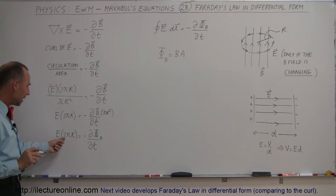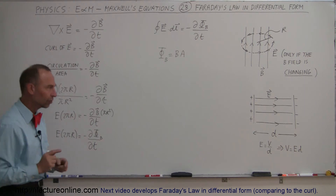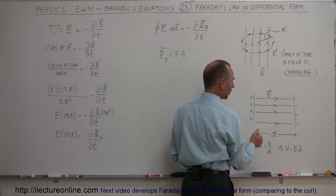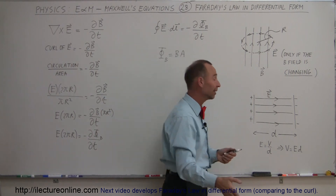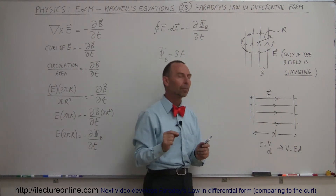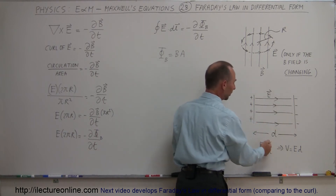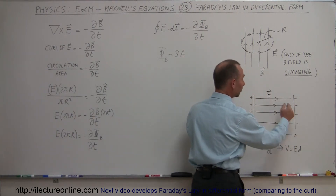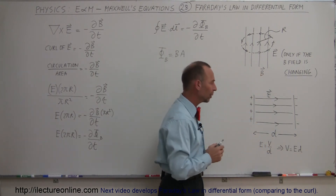E times 2πr is the strength of the electric field times the distance we go around the circle. Going back to something familiar — a capacitor with charge on each plate — the electric field strength equals the voltage between the plates divided by the distance between the plates. So electric field strength times distance equals potential difference. Even though there are no batteries or charges, the changing B field sets up an electric field which acts like an EMF, an electromotive force — a potential difference going around the circle.